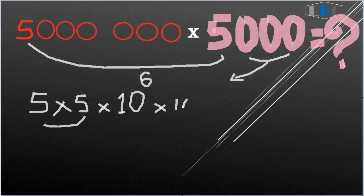10 times 10 times 10... So you can calculate here, five and five is 25.